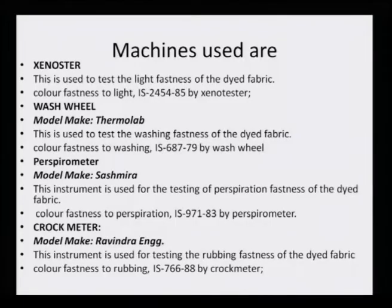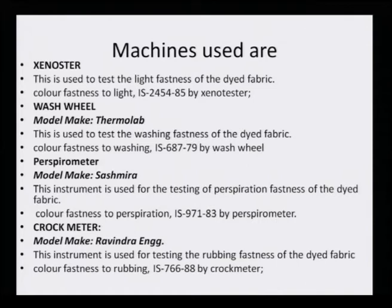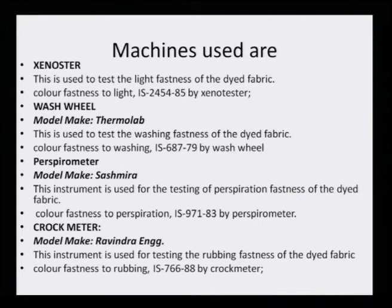The machines used are: the Xenoster, used to test the light fastness of dyed fabric. The color fastness to light by Indian standard IS 2454, introduced in 1985, allows the Xenoster machine to be used for ascertaining light fastness. The wash wheel, particularly the model made by Thermolab, is used to test the washing fastness of the dyed fabric. Color fastness to washing was ascertained by Indian standard IS 687, introduced in 1979. IS stands for Indian Standards.